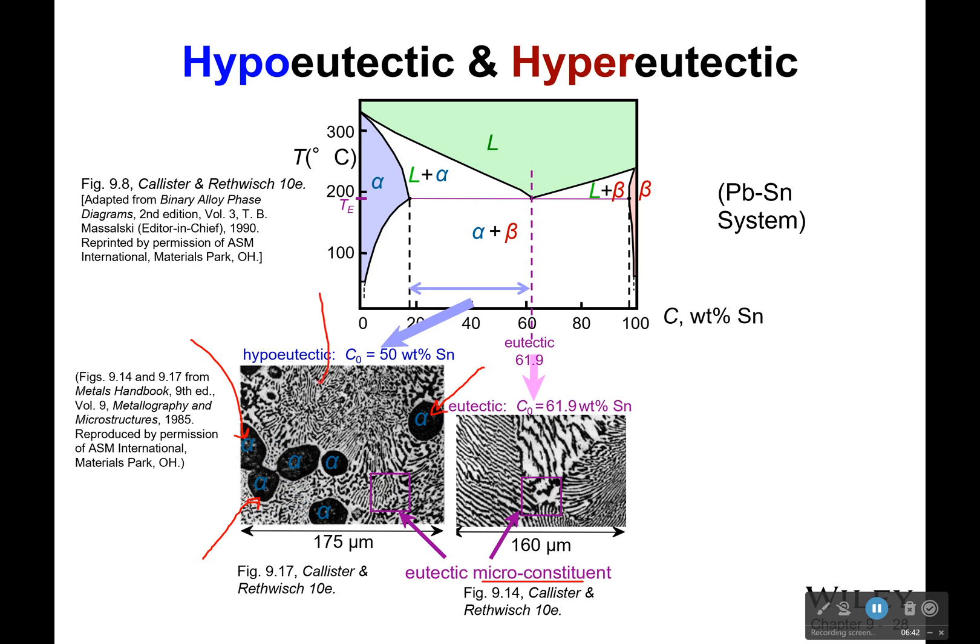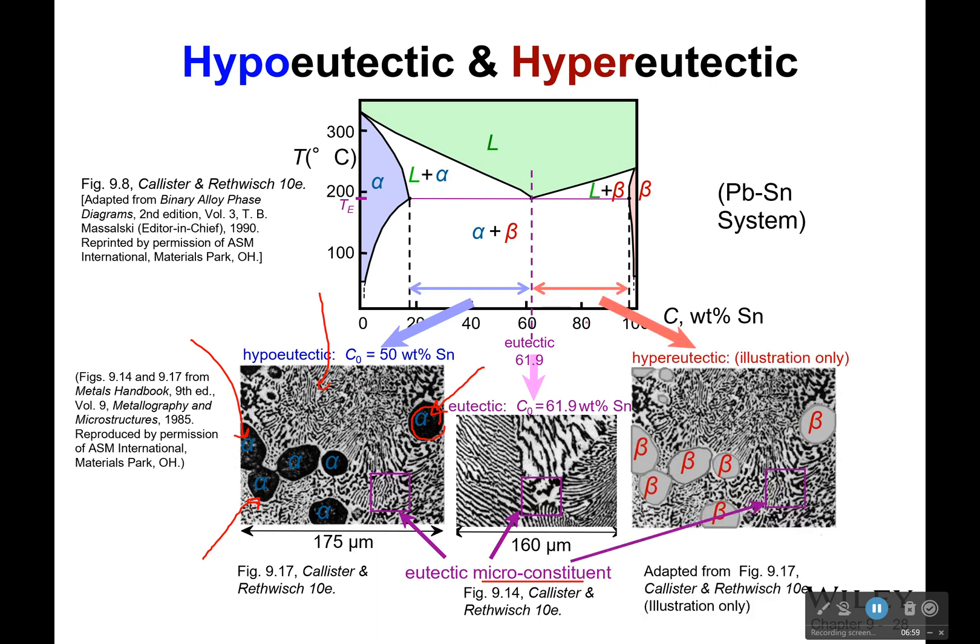There's all this lamellar structure around them. But because I had too much, or I guess you could say too little tin, or too much lead, there was too much to form these nice little grains. And so some of it just turned into this big ball of the lead. However, if I'm hypereutectic, I have too much tin. Too much tin over here. So I'm to the right. This is hyper. This is hypo. To the left of the eutectic point is hypo. To the right of the eutectic point is hyper.